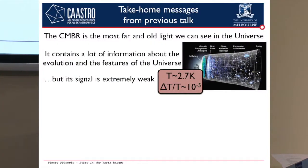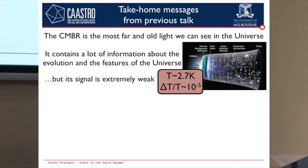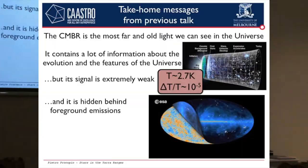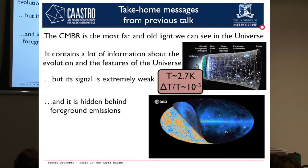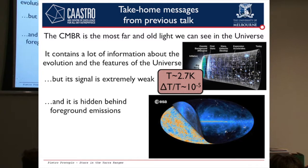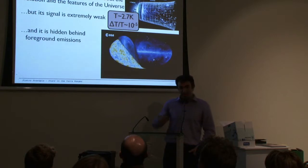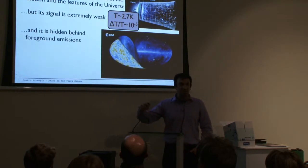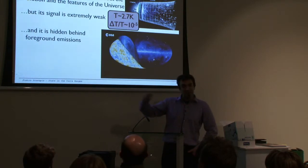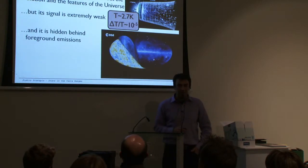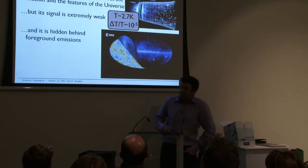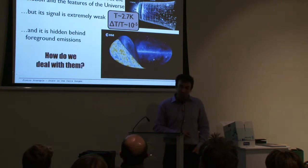Unfortunately, this light is very, very weak and the effort to detect it is really, really huge. And more than this, it's hidden behind foreground emissions. Those foreground emissions are much stronger than the CMB, and are actually between us and this light. Because this light is the first light of the universe, whatever else was created with the evolving universe is between us and this light — that is to say galaxies, stars, infrared light, whatever light you can imagine. So in this talk, I'm going to show you how we can deal with the foregrounds.